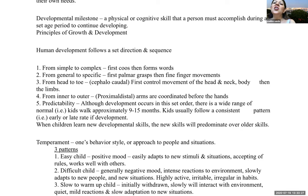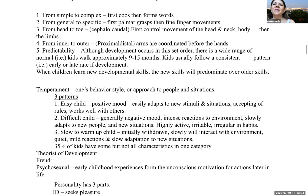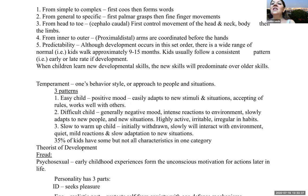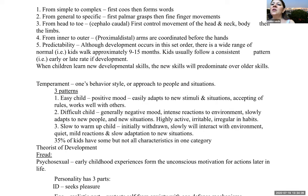Human development follows a set direction and sequence. It goes from simple to complex — a baby will coo and then form words. From general to specific — first a palmar grasp, then fine finger movements. From head to toe, or cephalic-caudal — first controlled movement of the head and neck, then the body, then the limbs. From inner to outer, or proximal-distal — the arms are coordinated before the hands and fingers.